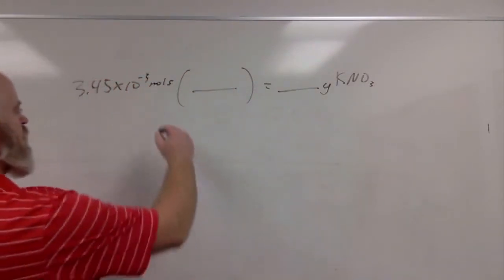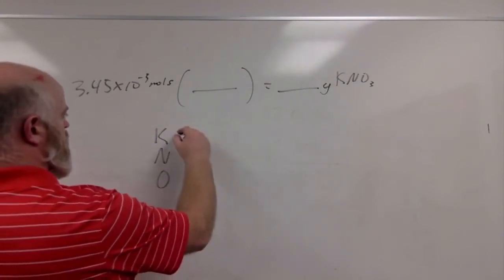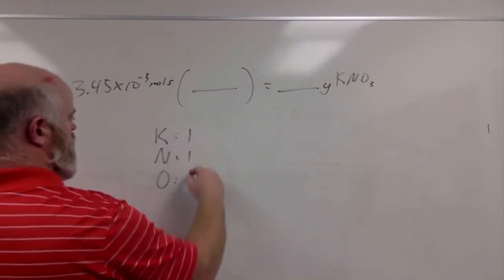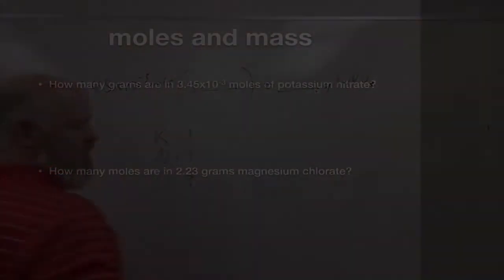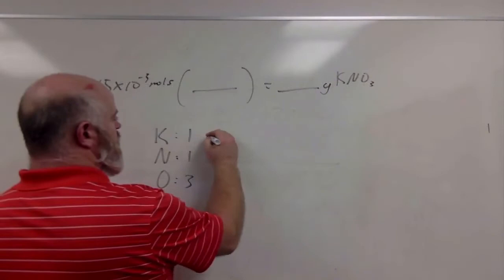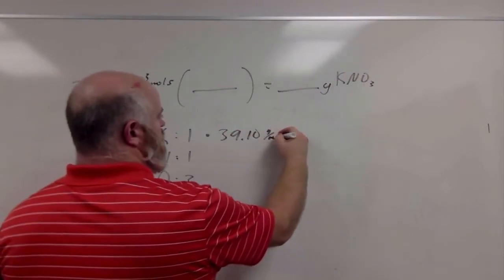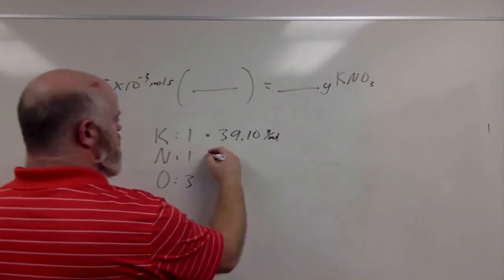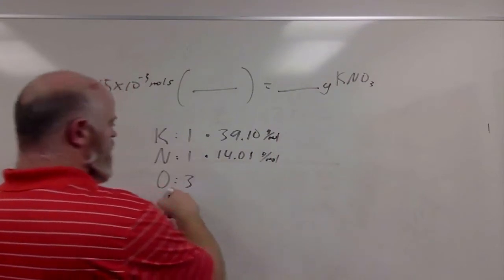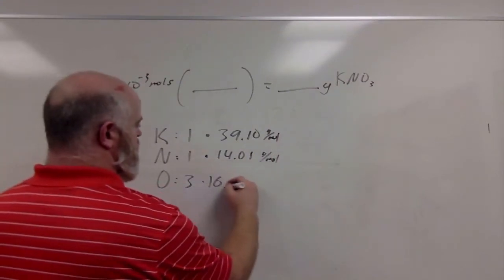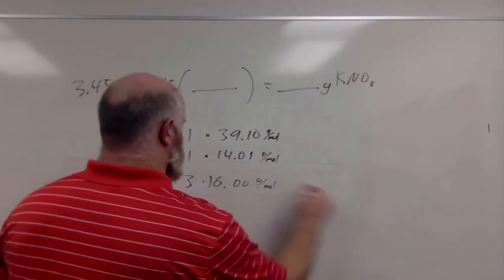We have one potassium, one nitrogen, and three oxygens. Potassium has an atomic mass of 39.10 grams per mole. Nitrogen is 14.01 grams per mole, and oxygen is 16.00 grams per mole.